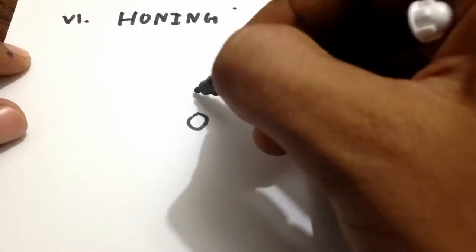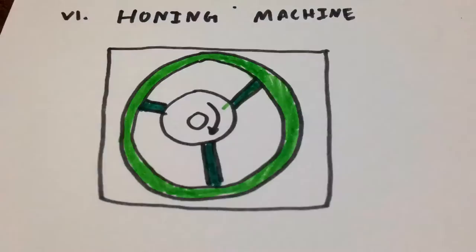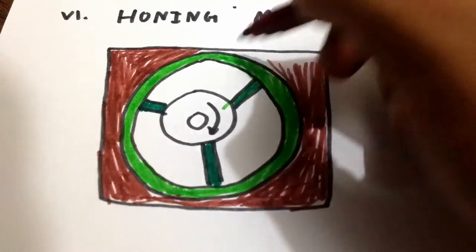Sixth, Honing Machines. Honing is an abrasive machining process that produces a precision surface on a metal workpiece by scrubbing an abrasive stone against it along a controlled path.